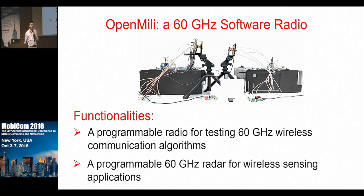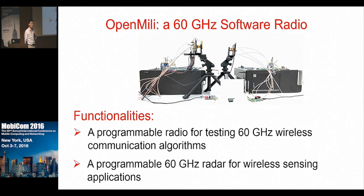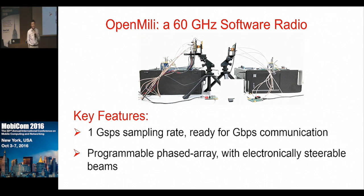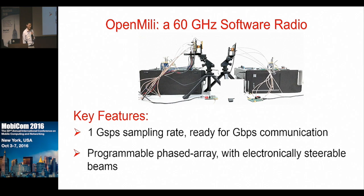OpenMilli is designed to fill this gap. You can think of OpenMilli as a programmable wireless platform that allows us to implement any kind of signal processing, communication, or networking algorithms running at the 60 gigahertz spectrum. You can also think of it as a programmable 60 gigahertz radar to support wireless sensing applications. When we designed this platform, we kept two key features in mind: first, OpenMilli is a wideband software radio with about one giga sample per second sampling rate, or one gigahertz of effective bandwidth; second, it has a programmable, electronically steerable phased array antenna, which is unique to 60 gigahertz radios.